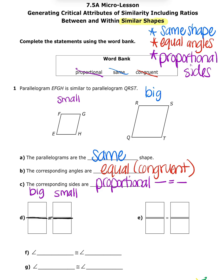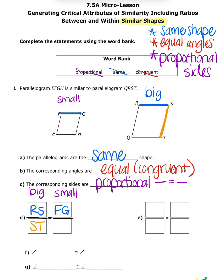Looking at the large figure, I have side RS — that's this side right here. On the small figure, the matching side would be FG. Then let's pick another side: on the large figure, ST, and the matching side on the smaller figure would be GH.